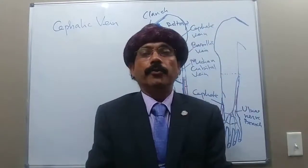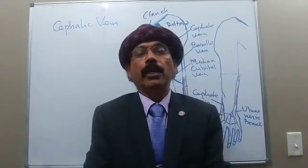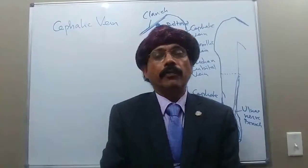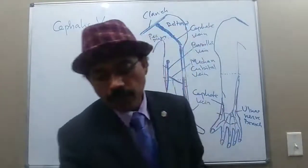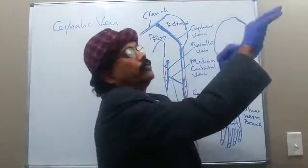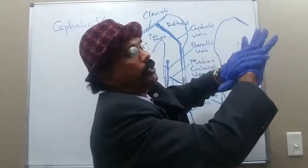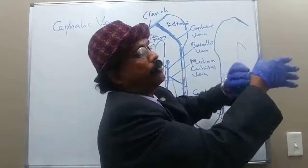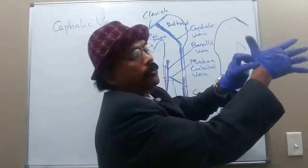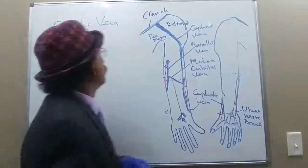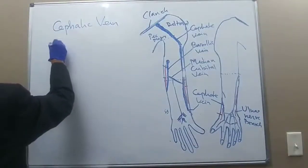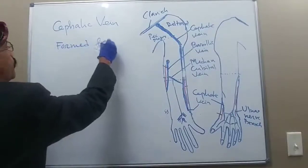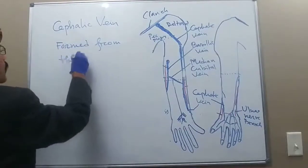Hello, my name is Dr. Diwan S. Raja. Today I will discuss the anatomy of the cephalic vein. The cephalic vein is formed from the dorsal venous network — this is our dorsal venous network on the dorsal of the hand — from the lateral aspect of the dorsal venous network, and it is formed in the anatomical snuffbox.